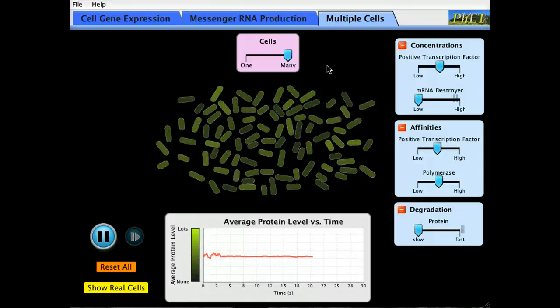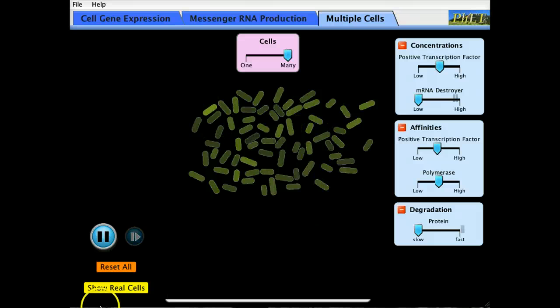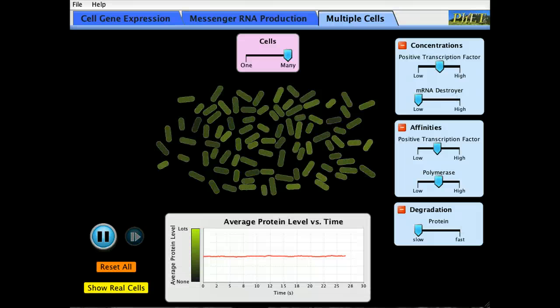What's interesting, however, is that the variation between the cells is going to be washed out in the population. You'll notice that the average protein level per time now is much less noisy. It should be pretty simple for you to generate a good coherent explanation for why, even though each cell is noisy, the population seems to be constant.